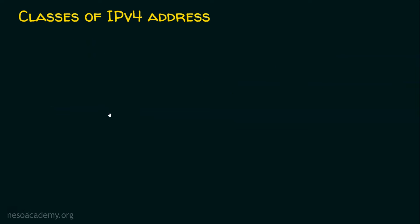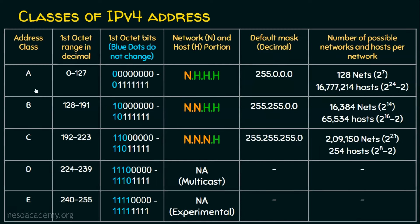We know basically there are five classes of IP addresses: class A, B, C, D, and E. We have solved a question in class C in the previous lecture. Now we will focus on class B network.